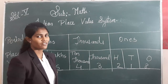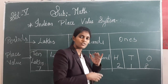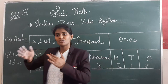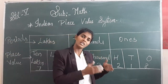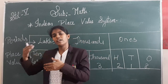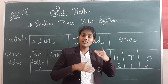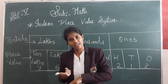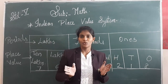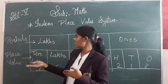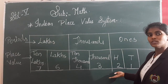So children, what have we studied today? Whole numbers and natural numbers — whole numbers start from zero, one, two, three and so on, while natural numbers start from one. Then we learned about lakhs and ten lakhs, and after that we learned about periods and the place value system.